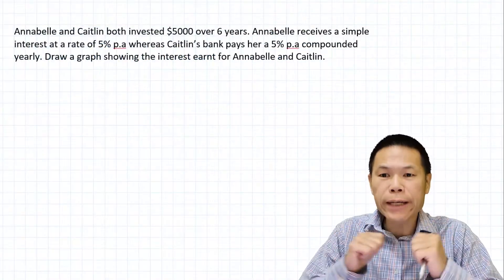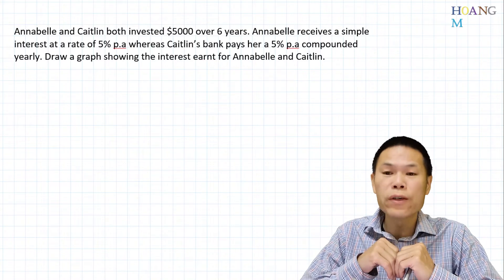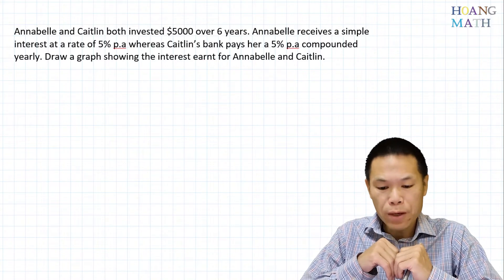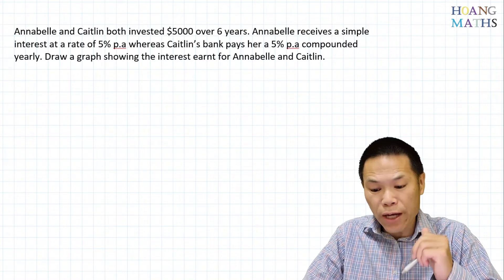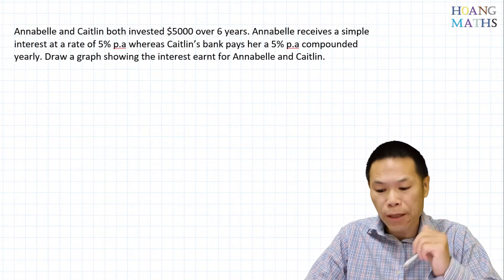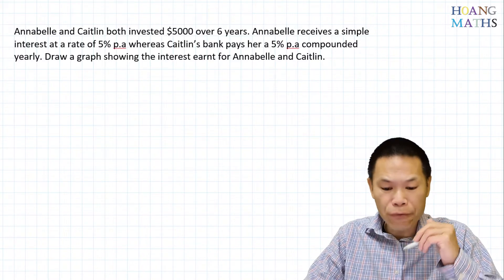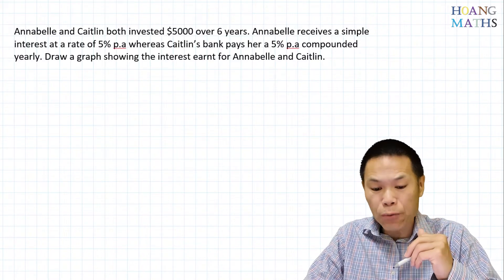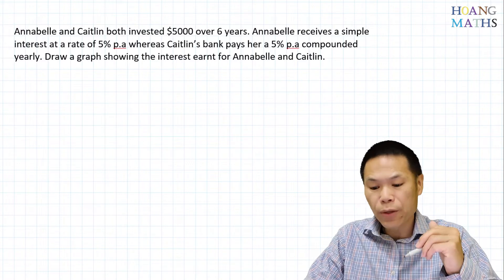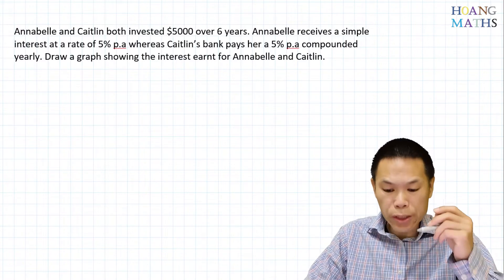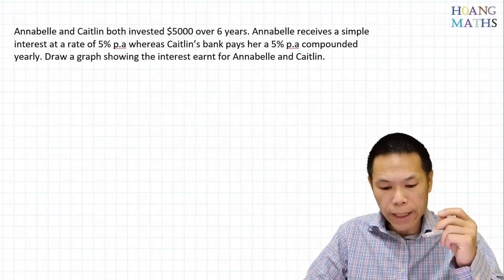Annabelle and Kaylin both invested $5,000 over six years. Annabelle receives simple interest at a rate of 5% per annum, whereas Kaylin's bank pays her 5% per annum compounded yearly. Draw a graph showing interest earned for Annabelle and Kaylin.